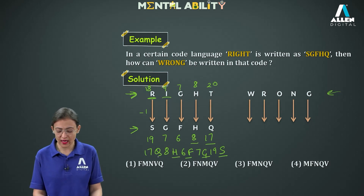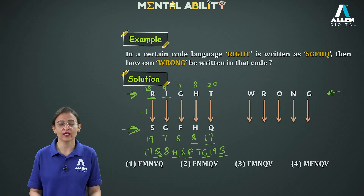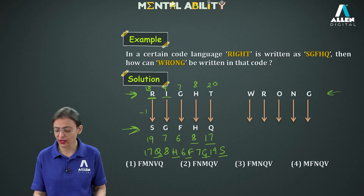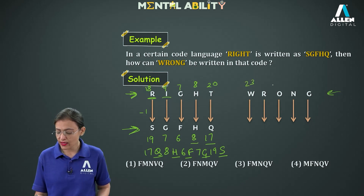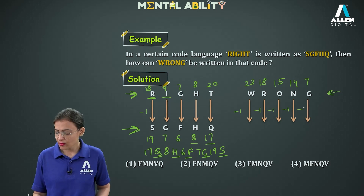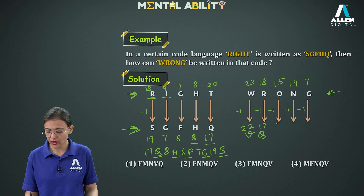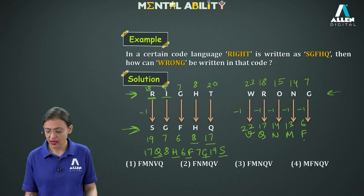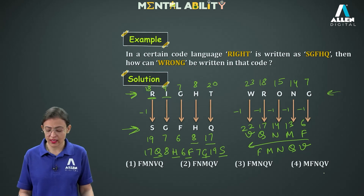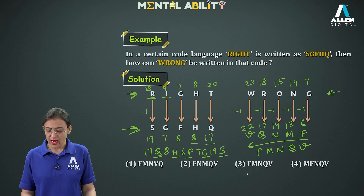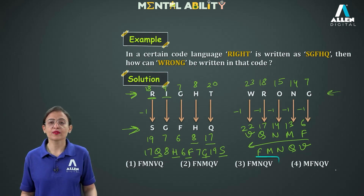Applying the same to WRONG: W=23, R=18, O=15, N=14, G=7. Subtracting 1: 23-1=22=V, 18-1=17=Q, 15-1=14=N, 14-1=13=M, 7-1=6=F. Writing in reverse order: F, M, N, Q, V. So the required code is FMNQV and the third option is correct.